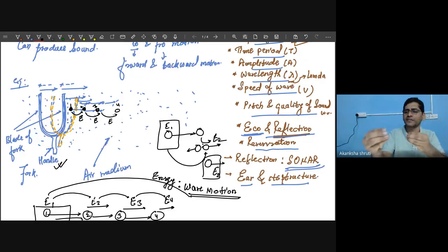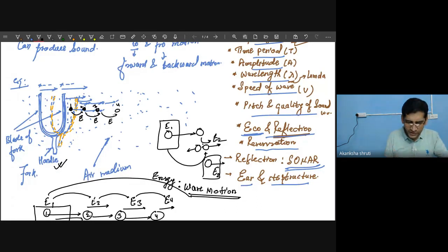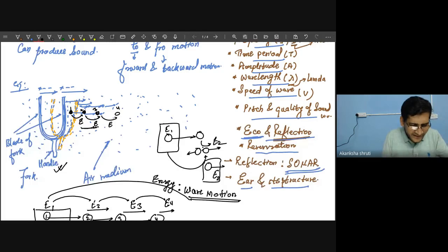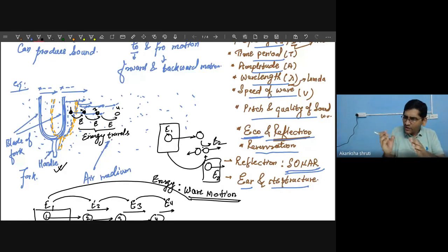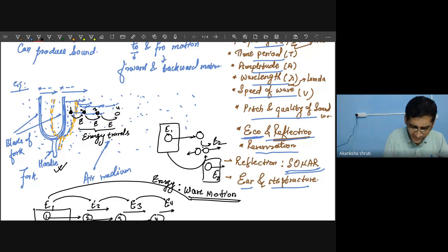The energy has been transferred to your ear. This particle pushes the other, that pushes others, and finally the energy reaches your ear. Even my own sound reaches my own ear this way. So this way energy travels — this mode of energy travel where energy moves without actual motion of the particle is called wave motion.